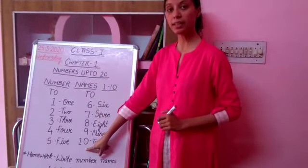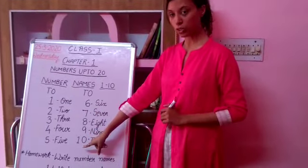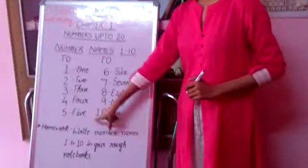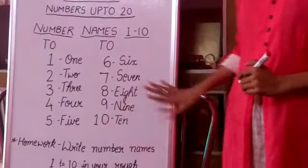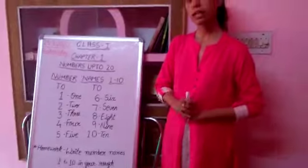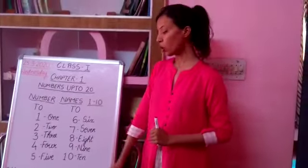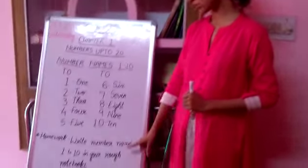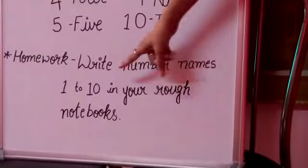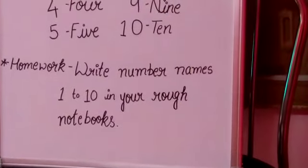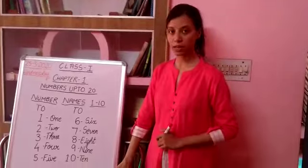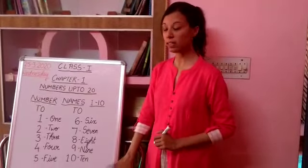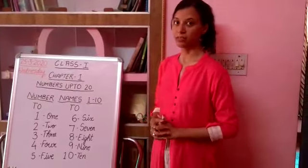Only when we come to 10, there are 2 digits. So we will write 1 under T and 0 under Ones. This you have to keep in mind. Now I would like to give you homework about this. Your homework is to write number names 1 to 10 in your rough notebook, the same way as I have written here.